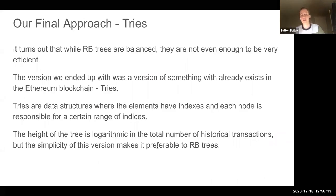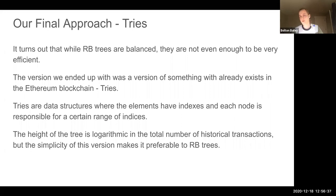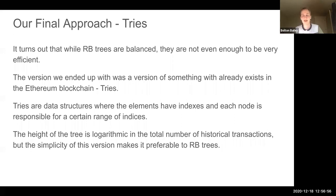The red-black tree is balanced, but not perfectly balanced — one side can still be somewhat shorter than the other. We tested it out and in practice the red-black tree was not really the most efficient version. The version we ended up with was a variant of what is used in the Ethereum blockchain: a trie, a data structure with indices where each node has a set of indices below it. The height of the tree is logarithmic in the total number of historical transactions, and it's simpler and preferable to red-black trees.